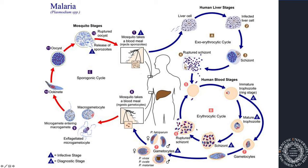One characteristic of malaria is that these schizonts rupture at about the same time, giving you cyclical fevers. Depending on the species of malaria — there are five that affect humans — it might take three or four days for the schizonts to rupture. But every third or fourth day, you get really, really sick with really high fevers and aches.